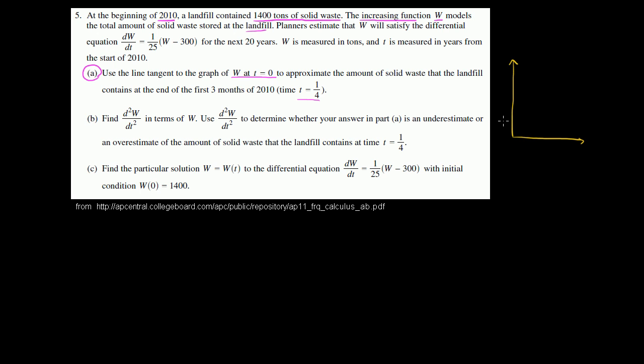We don't know yet what w actually looks like, but they tell us it's an increasing function. So at time 0, it has 1,400 tons in it. They tell us that right up here. And then it increases. We don't know what the function actually looks like, but let's say that that is w.